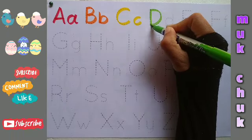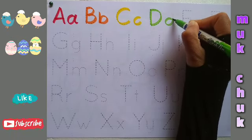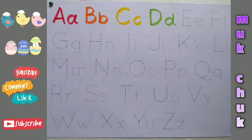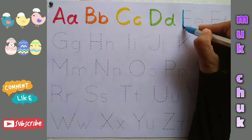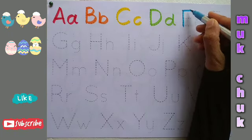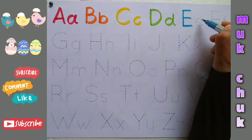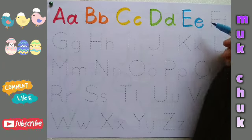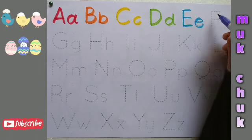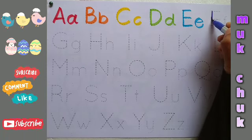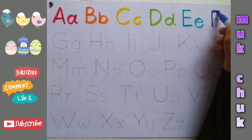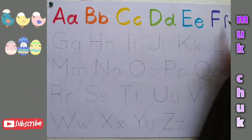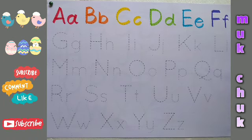D, capital D, small d. D for dog. E, capital E, small e. E for elephant. F, capital F, small f. F for fish.